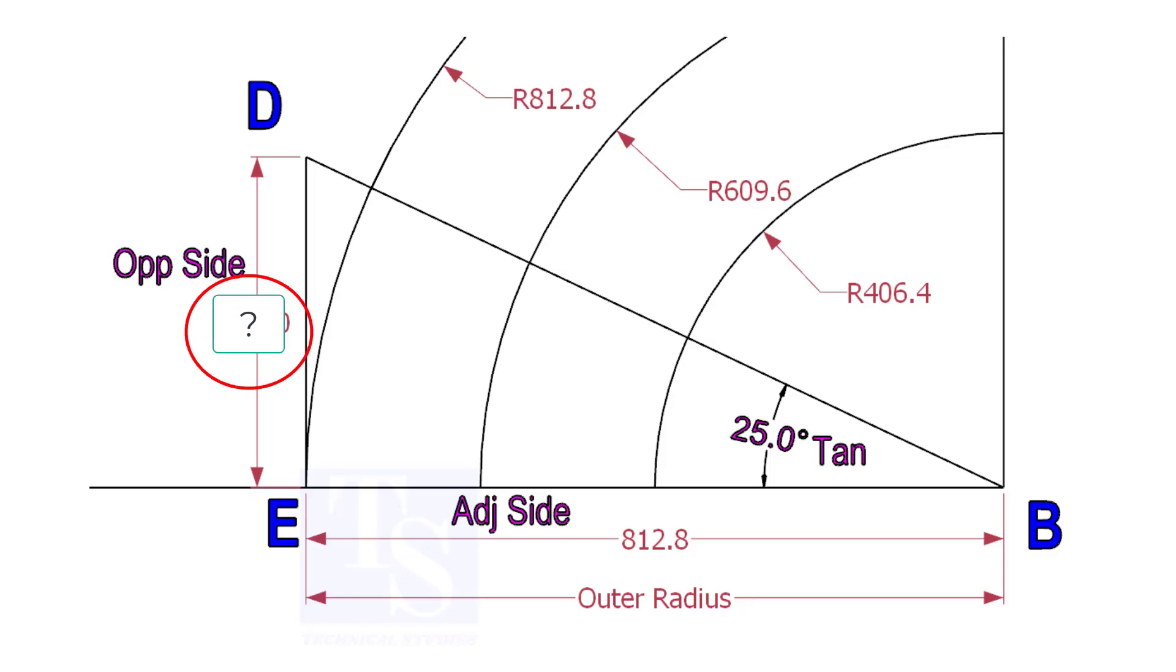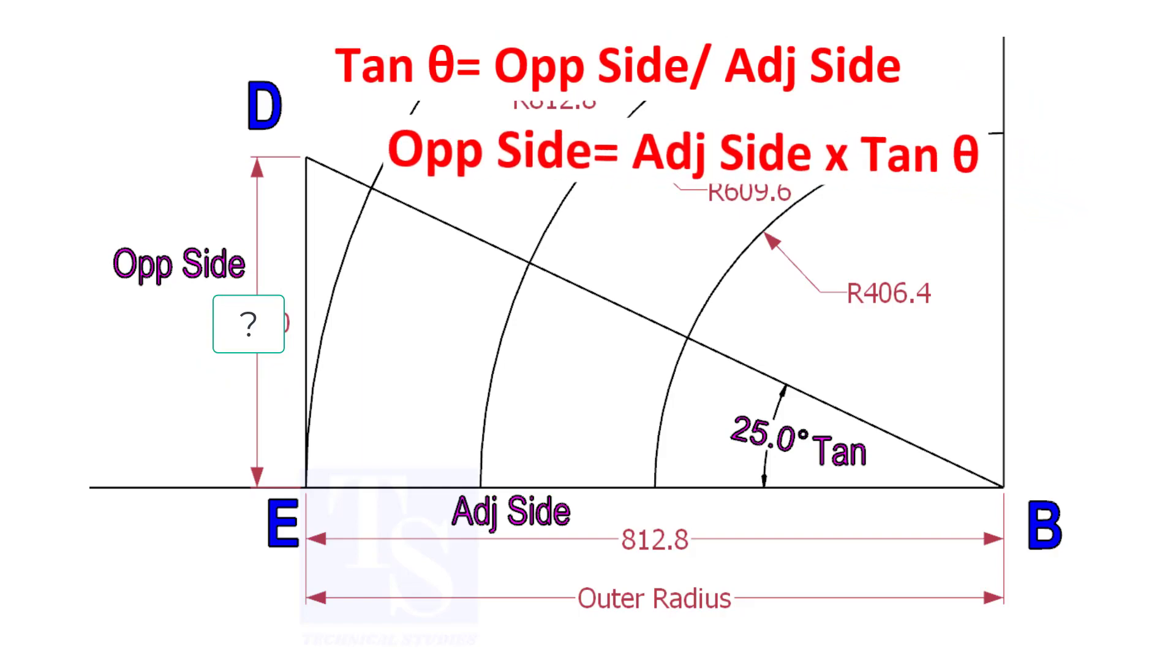To calculate ED, we need to apply the formula: tan theta equals opposite side divided by adjacent side. Opposite side equals adjacent side multiplied by tan theta.